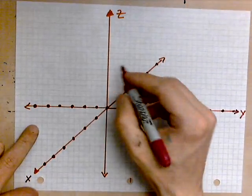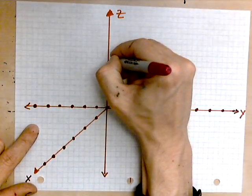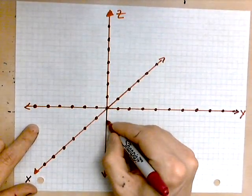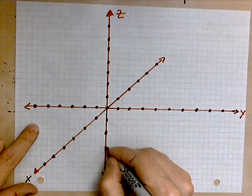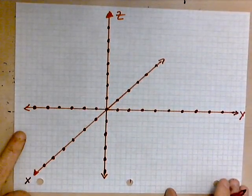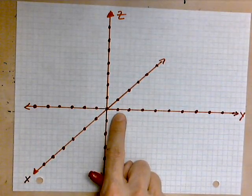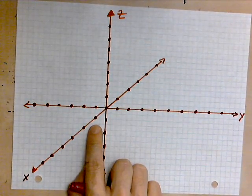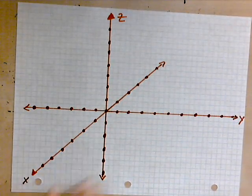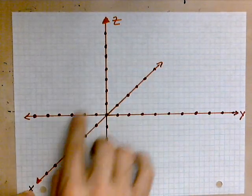Do the same thing along the z-axis, up and down. Keep the spacing between the dots uniform, meaning about the same — it doesn't have to be a masterpiece, but reasonable. So this is our coordinate system. Each dot is a number, such as y equals 1, z equals 1, or x equals 1. Each of these is a coordinate axis.